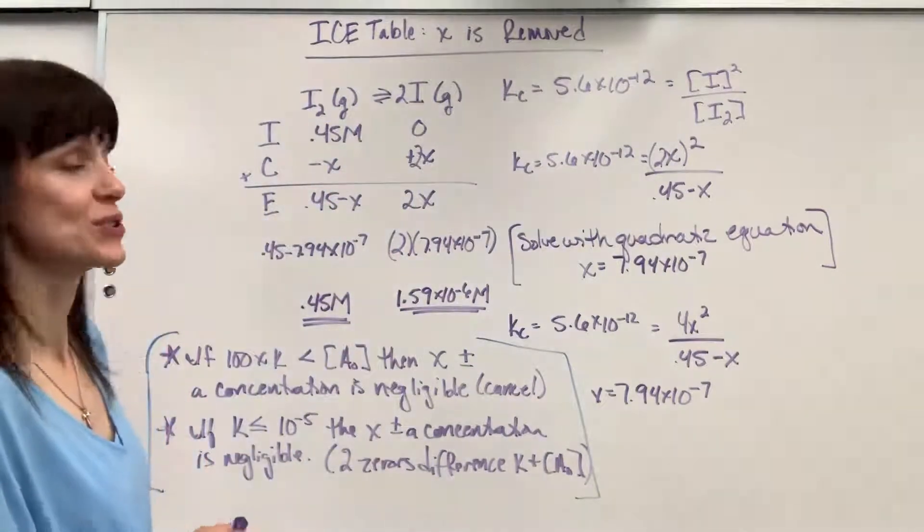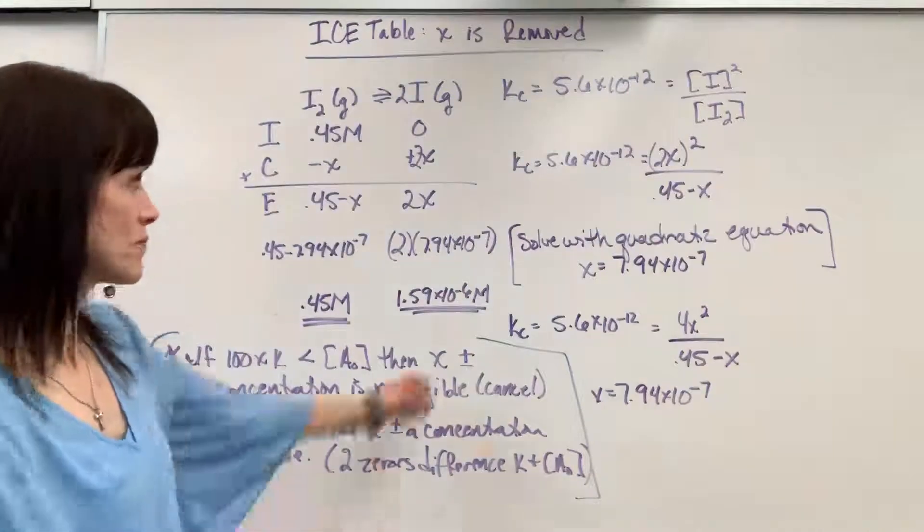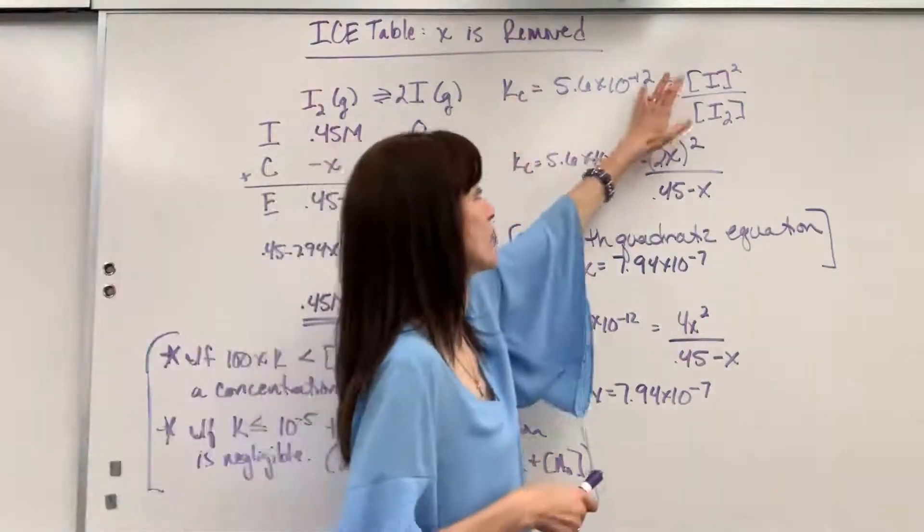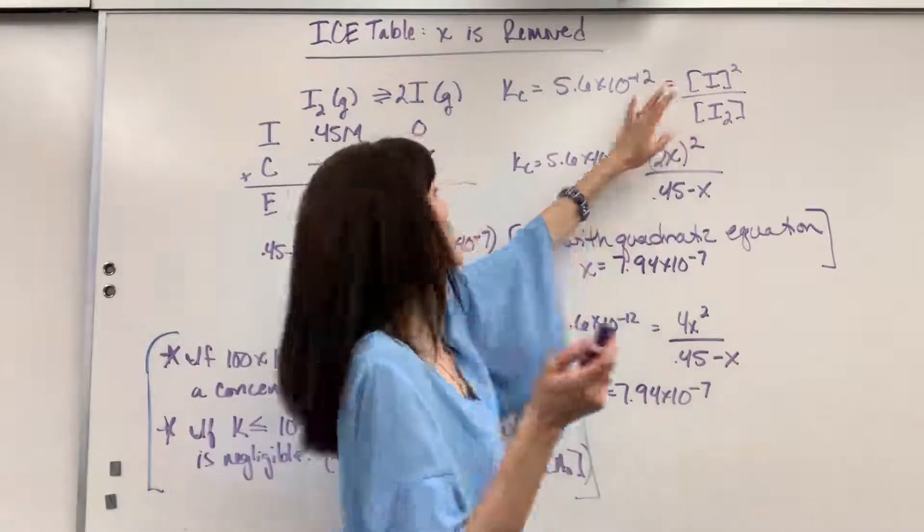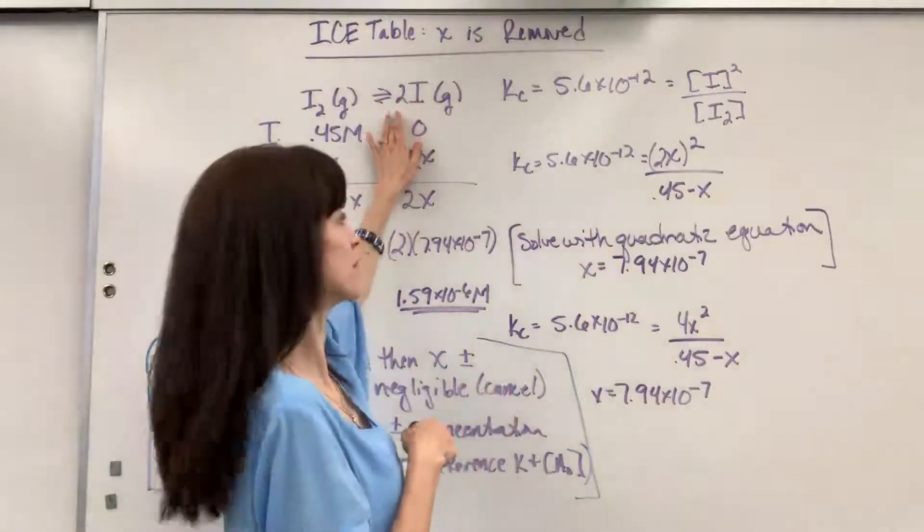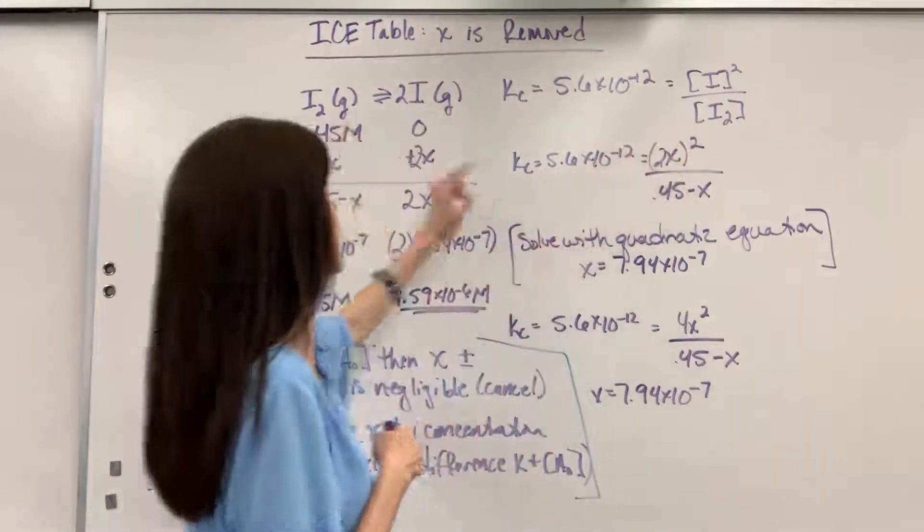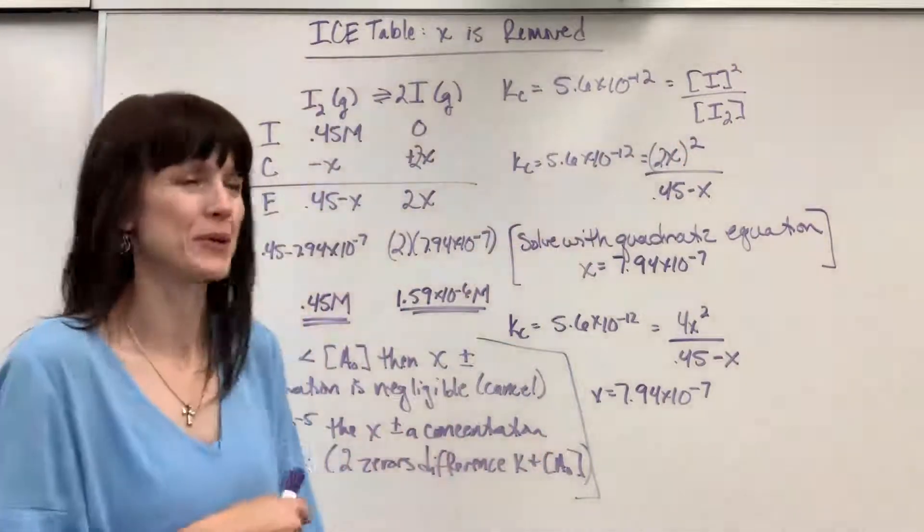So let's go ahead and write this into our equilibrium expression. The generic formula, Kc is going to be products, I squared because of that 2, I'm really careful with that, divided by reactant which is just the I2 to the 1 power.